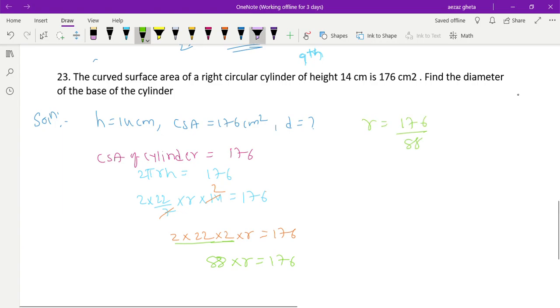Therefore r = 176/88. You can cancel it: 11 × 8 = 88, then simplify further. After cancellation, r = 2 centimeters.